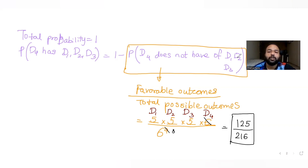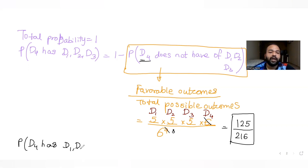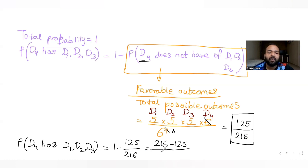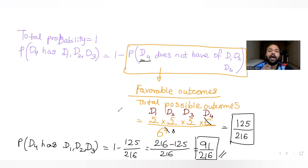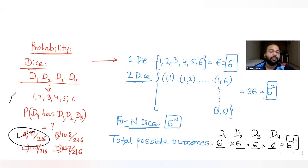So the complement probability — that D4 does not have any outcome matching D1, D2, or D3 — is 125 by 216. Therefore, the probability that D4 does match any one of D1, D2, or D3 is 1 minus 125 by 216, which equals 216 minus 125 by 216, giving us 91 by 216. The correct answer for this question is option A: 91 by 216.